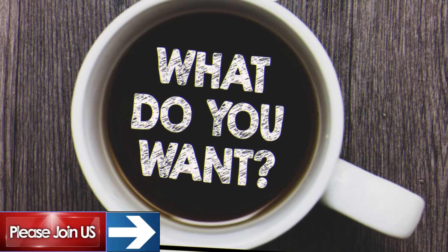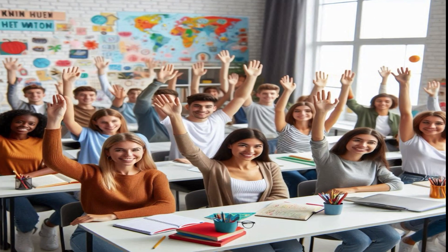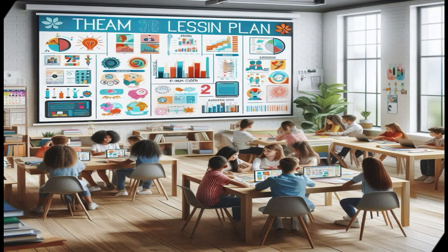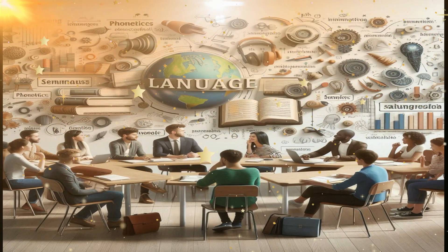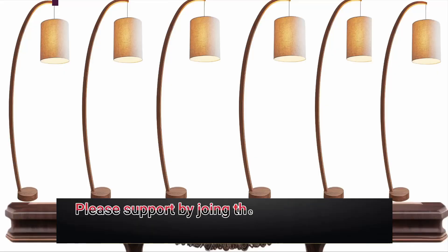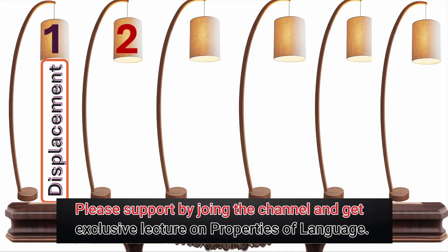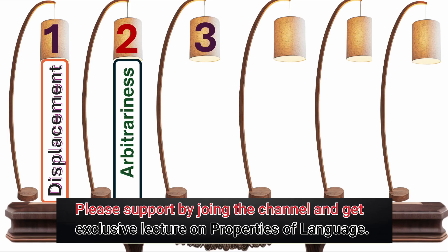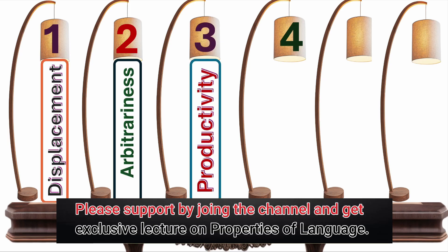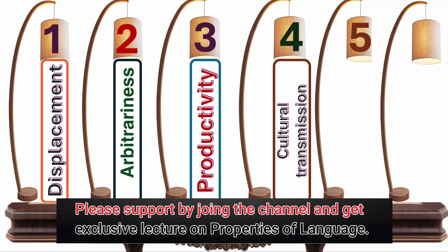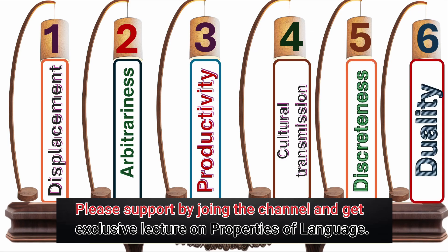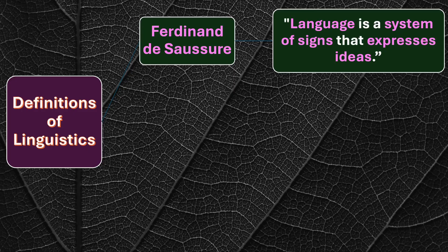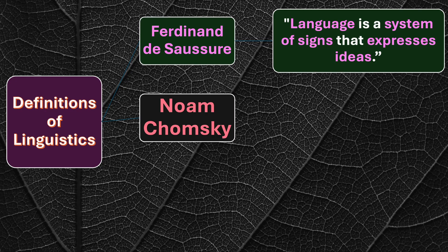Do you really want to know what the properties of language are? The lesson is designed in such a way that learners feel highly motivated to learn each of the properties of language. The first one is displacement, the second is arbitrariness, the third is productivity, the fourth is cultural transmission, the fifth is discreteness, and the sixth is duality. The link for this lecture is given in the description.